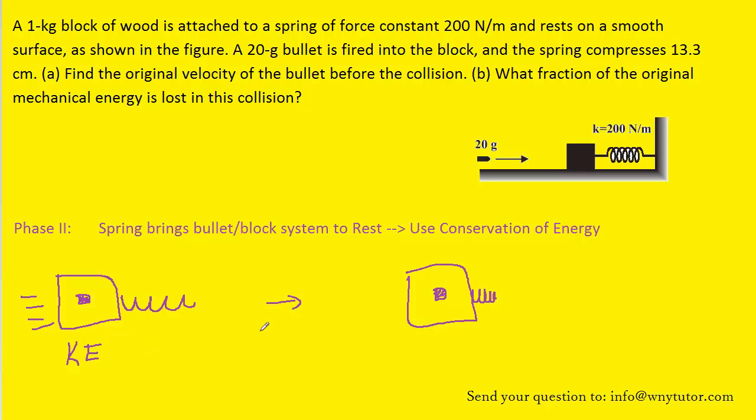As the spring brings the objects to rest, the kinetic energy disappears and is converted into the spring potential energy, sometimes called the elastic potential energy. Some textbooks use the symbol Ux to represent the spring potential energy. Because energy is conserved in this process, we can set the kinetic energy that was initially present equal to the elastic potential energy that was finally present.